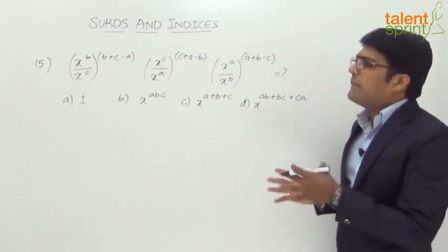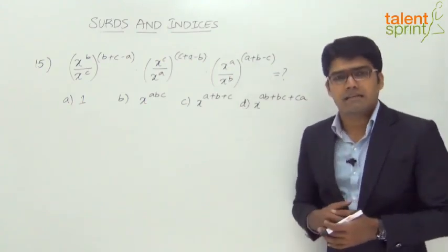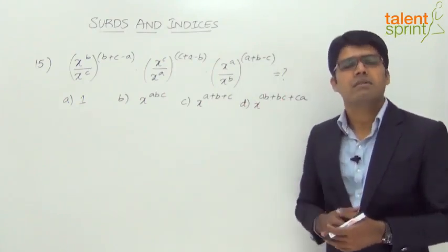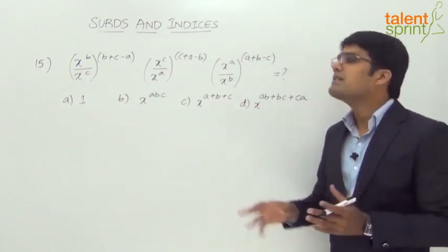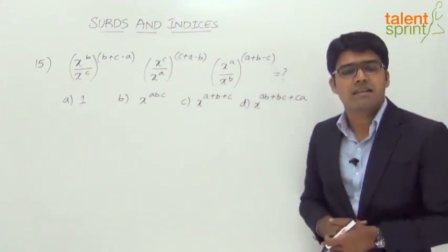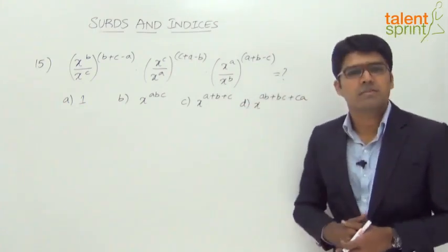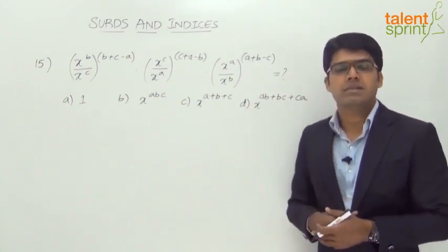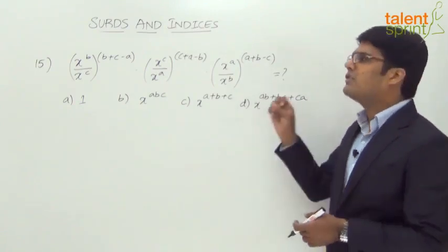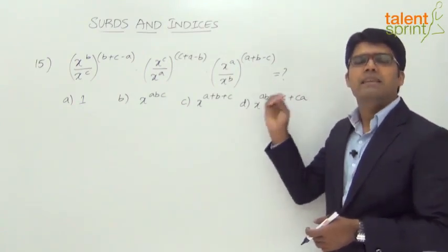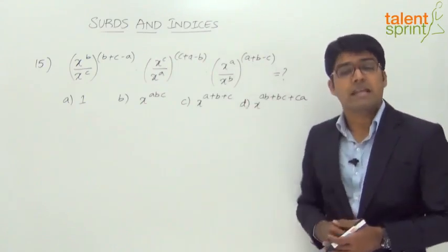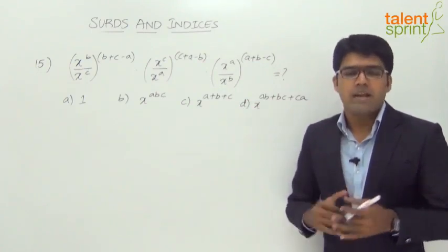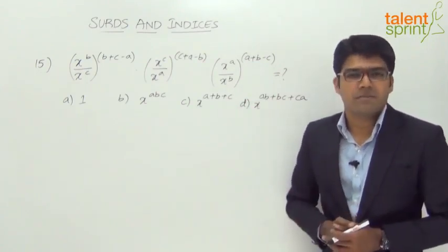There is no single fixed method for answering these questions directly. These types of questions are all different from each other. All we need to do is simplify using the laws of surds and indices. A smarter way is to substitute random values in place of x, a, b, and c, and check which answer option satisfies the given expression. Let us look at both methods.